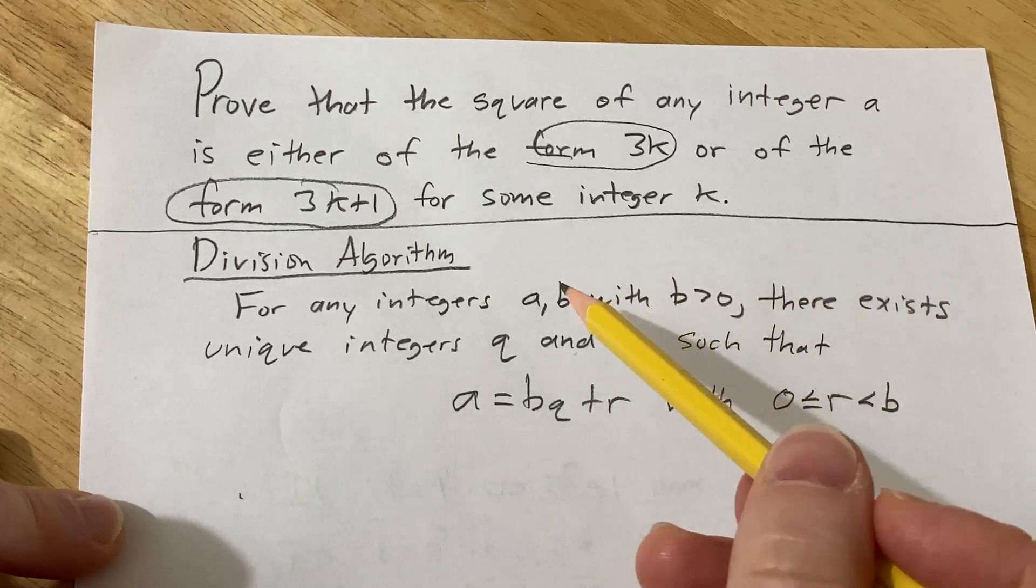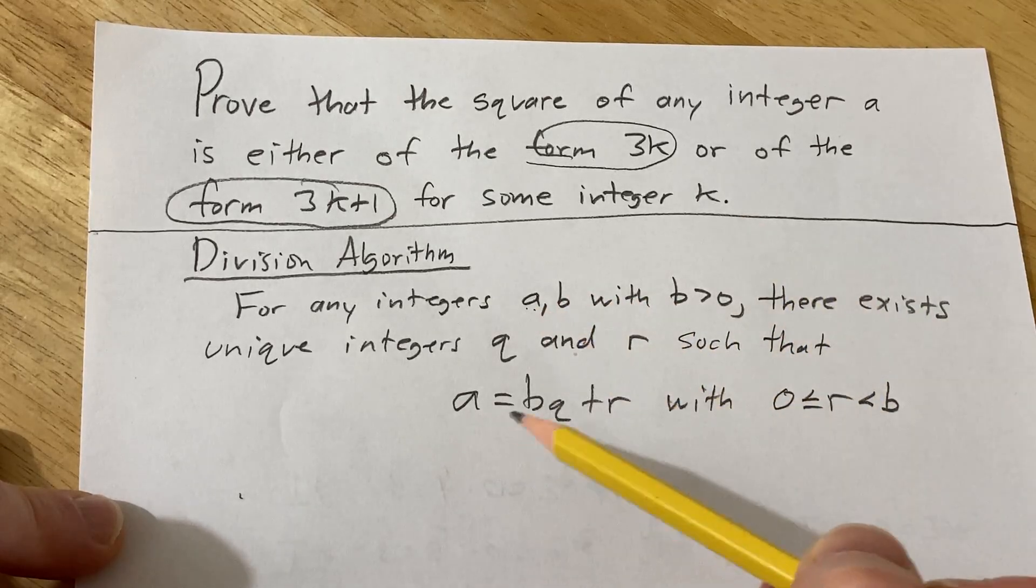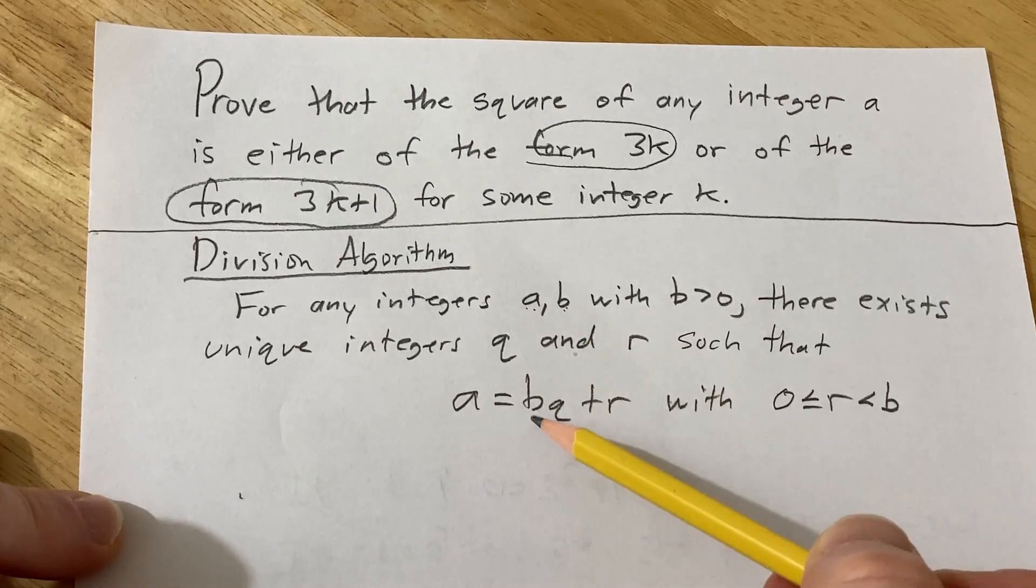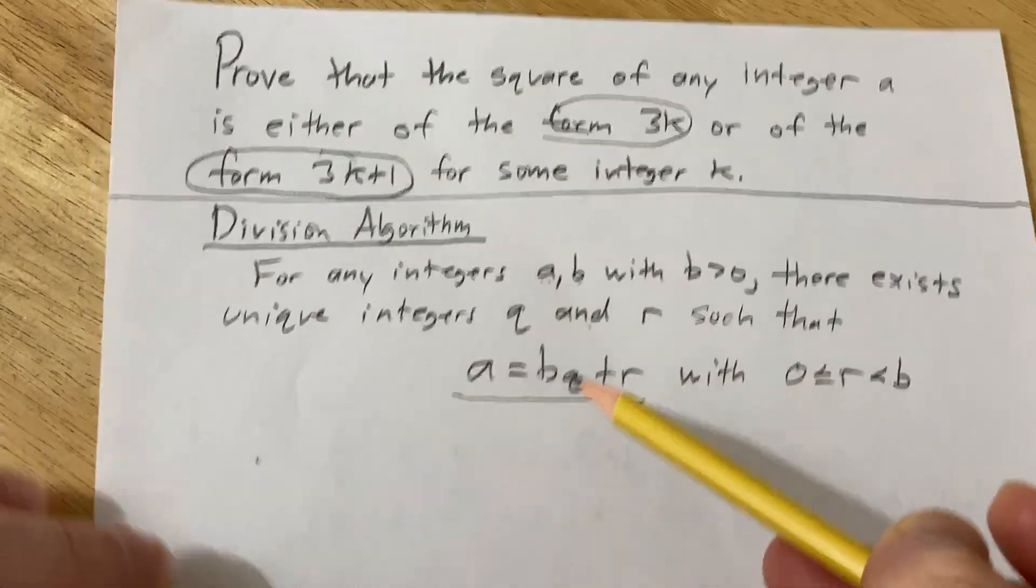The natural thing to do here is we're going to take a to be our integer and then we're going to choose b to be equal to 3. That way we get a 3 here in the formula.